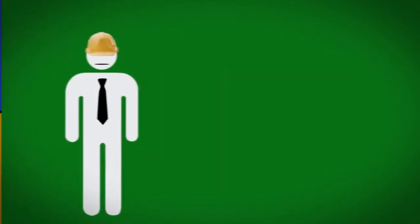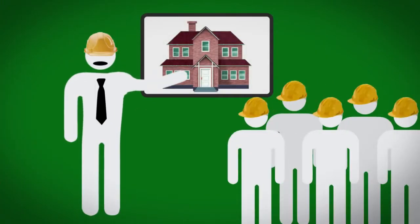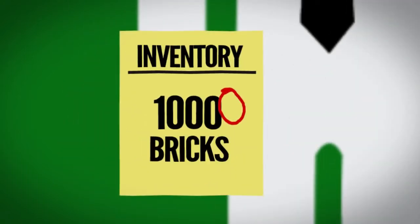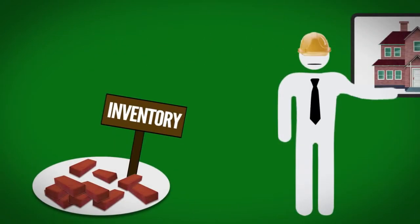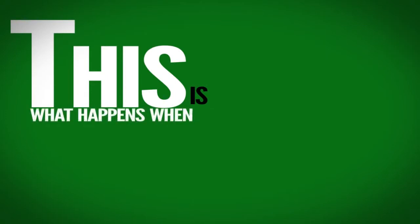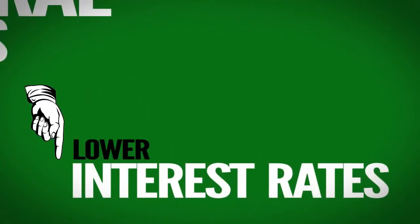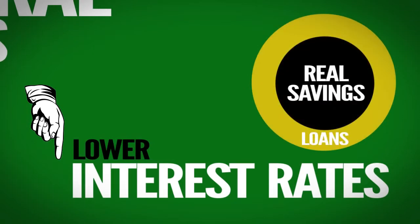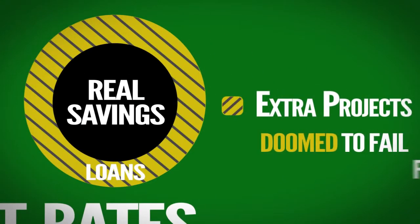For example, if a bricklayer thinks he has 10,000 bricks and starts a new construction project, but he really only has 1,000 bricks, he is destined to fail. And there will be an inevitable bust as he runs out of bricks. This is what happens when central banks artificially lower interest rates. Too many loans are given relative to the amount of real savings in the economy. And those extra projects are doomed to fail from the beginning.